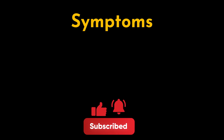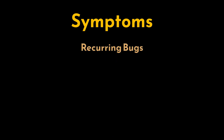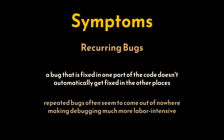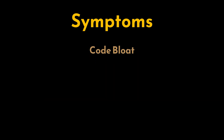The symptoms of copy and paste programming become evident over time, particularly as a project grows in size and complexity. One of the most common issues is recurring bugs. A bug that is fixed in one part of the code doesn't automatically get fixed in other places where the same logic has been copied. These repeated bugs can be extremely frustrating because they often seem to appear out of nowhere, making debugging a much more labor-intensive process.